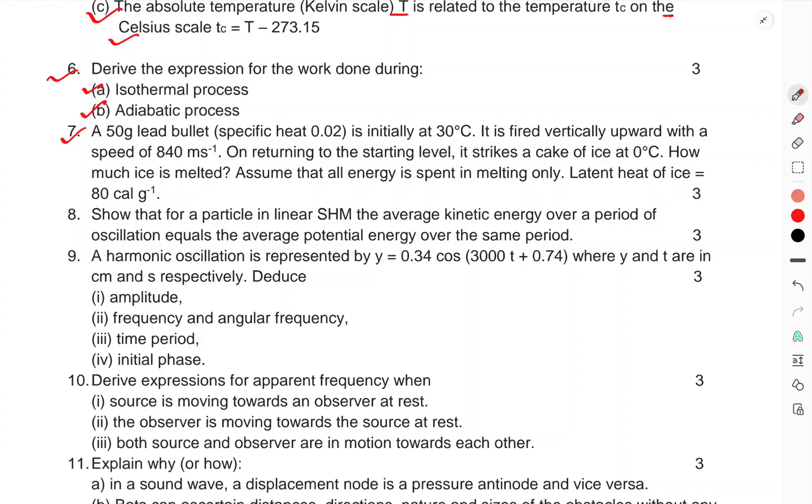Question 7. A 50 gram lead bullet at initially 30°C is fired vertically upward with a speed of 840 meter per second. On returning to the starting level, it strikes a block of ice at 0°C. How much ice is melted? Assume that all energy is spent in melting only. Latent heat of ice is 80 cal/g.